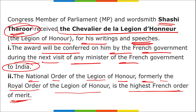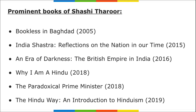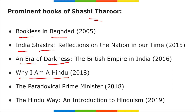Shashi Tharoor is a former international diplomat, politician, writer, and public intellectual, serving as Member of Parliament from Kerala since 2009. He served 29 years in the United Nations, rising to the position of Under-Secretary-General for Communications and Public Information in 2002. Some of his important books include Bookless in Baghdad, India Shastra, An Era of Darkness, Why I Am a Hindu, The Paradoxical Prime Minister, The Hindu Way: An Introduction to Hinduism.